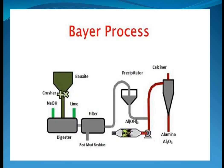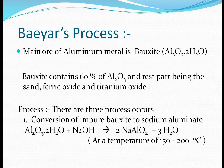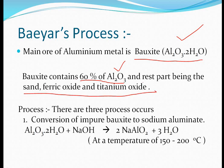Moving on to the extraction part, we first do Bayer's process. Aluminium is extracted from its main ore, bauxite, with the formula Al₂O₃·2H₂O. In the bauxite ore, 60% contains aluminium as Al₂O₃, and the rest consists of sand, ferric oxide, and titanium oxide, which are the impurities present in the bauxite ore.